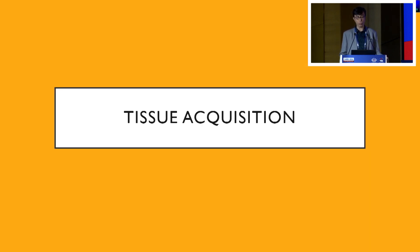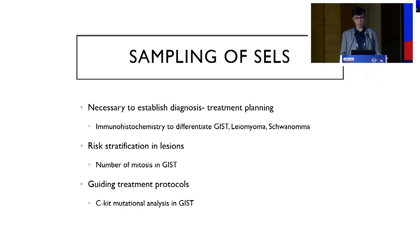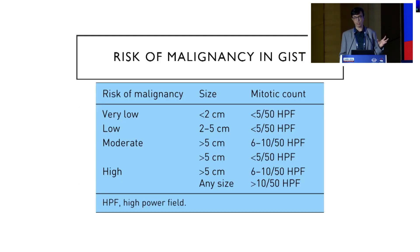Then comes the role of tissue acquisition. In most SELs, barring the few mentioned earlier, you have to acquire tissue to establish a diagnosis, plan the treatment, and do immunohistochemistry to differentiate between GIST, leiomyoma, schwannoma, etc. — and also for risk stratification by looking at mitotic figures. Larger lesions have more malignant potential, but sometimes smaller lesions with high mitotic figures also have reasonable malignant potential, so you need both pieces of information.